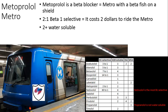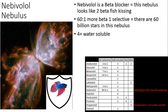Next, metoprolol — 'meto' kind of sounds like metro to me, so this is a metro with a beta fish shield on it. This is a two-to-one beta-1 selective. Just think it costs two bucks to ride the metro — we'll say for the sake of this it costs two dollars. It's also two-plus water soluble. So: two dollars, two-plus water soluble, to ride the metro.